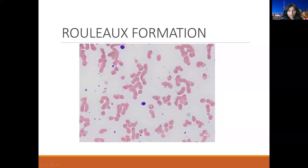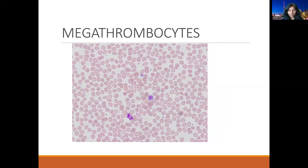Here you can see in the background there is a bluish tint, and all those RBCs are forming stacks. This is typical of rouleaux formation, which is typically seen in multiple myeloma or different lymphoproliferative disorders.